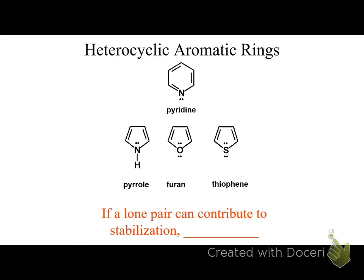You can also have heterocyclic aromatic rings. The names to know are pyridine, pyrrole, furan, and thiophene. Furan and thiophene are closely related — one has oxygen, the other sulfur. Pyrrole is related as well, with nitrogen. These are all aromatic, and they are related to cyclopentadiene, which is their non-aromatic cousin.